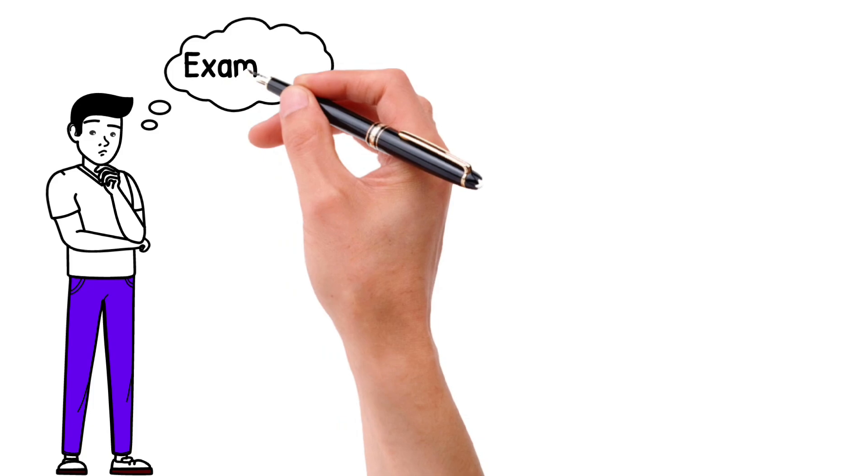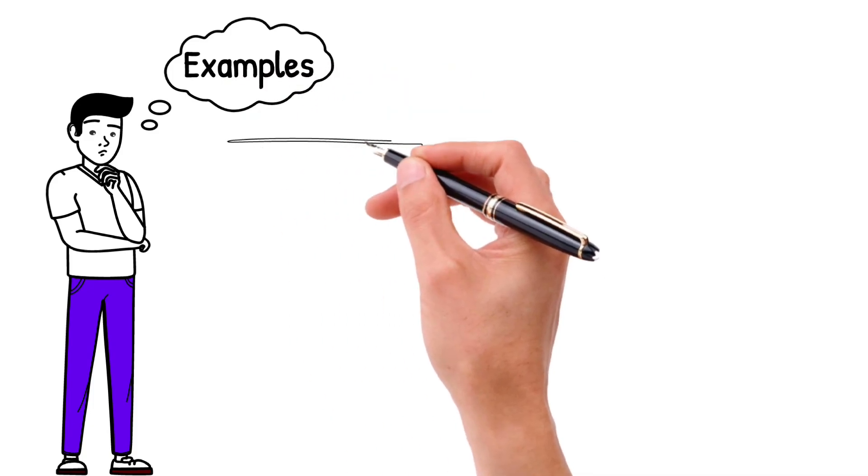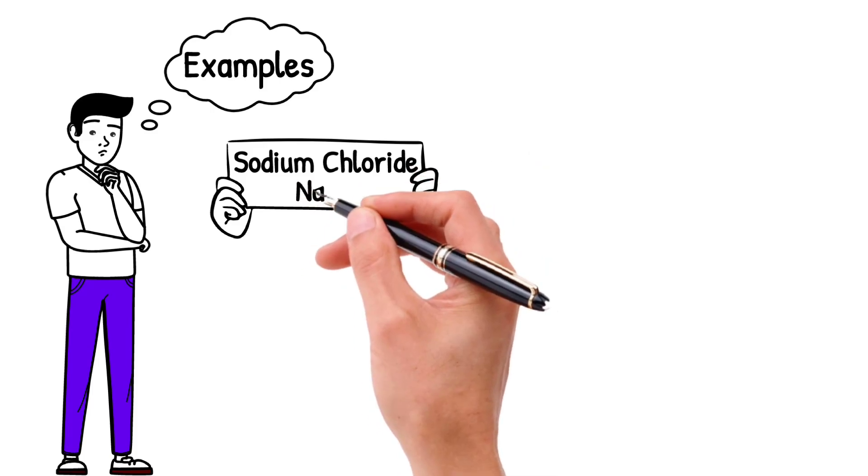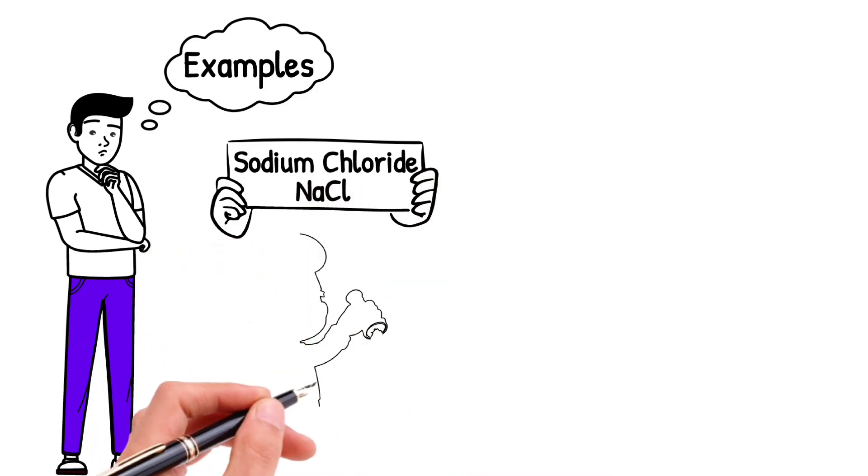Let me tell you some examples of ionic compounds and uses in our daily lives. One of the most common ionic compounds is sodium chloride, which is commonly known as table salt, and is used for flavoring our food.